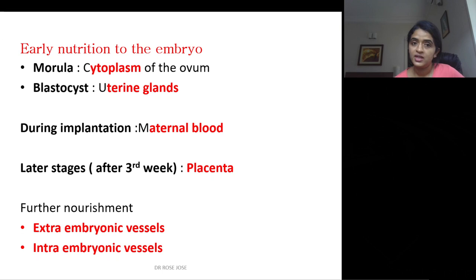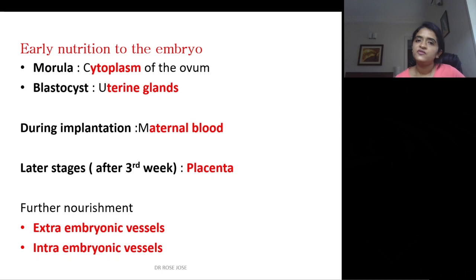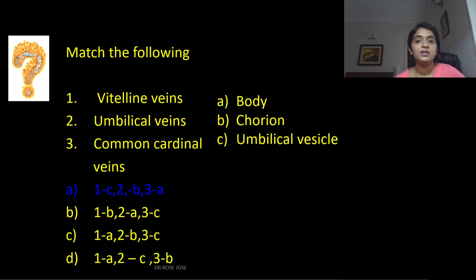Early nutrition to the embryo: at the morula stage, it gets nutrition from the cytoplasm of the ovum. At the blastocyst stage, it derives nutrition from uterine gland secretions. During implantation, it gets nutrition from maternal blood. In later stages, it is taken over by the placenta, and further nourishment is derived from extra-embryonic and intra-embryonic vessels.